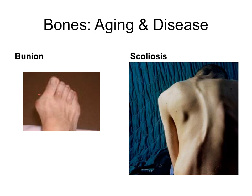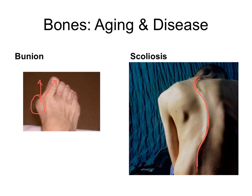Here are pictures illustrating these conditions. A severe bunion shows the bump at the first joint of the big toe, causing it to curve inward; bunions can be removed surgically with a bunionectomy to realign the toes. Scoliosis shows a curvature of the spinal column; in severe cases a back brace worn continuously may help, or spinal fusion surgery can join vertebrae together to keep them aligned and prevent further curvature.